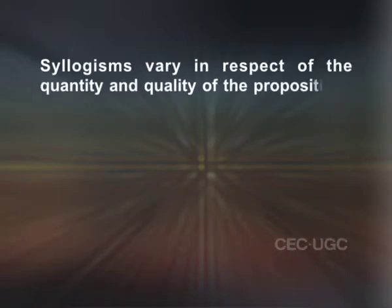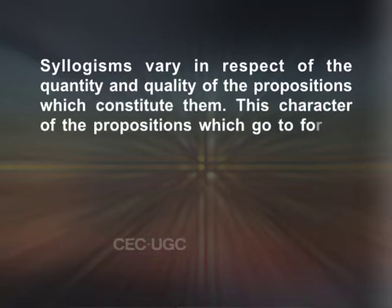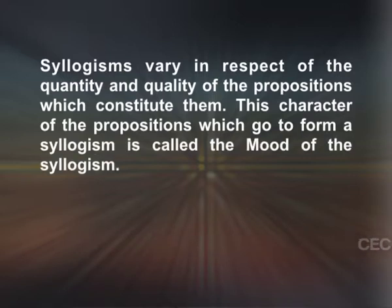Mood of a syllogism. The mood of a syllogism is determined by the quantity and quality of the constituent propositions of the syllogism. Syllogisms vary in respect of the quantity and quality of the propositions which constitute them. This character of the propositions which go to form a syllogism is called the mood of the syllogism. For instance, if all three propositions of a syllogism are universal affirmative, then the mood of that syllogism is A-A-A.